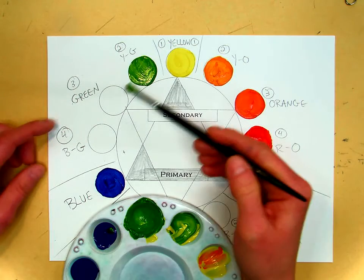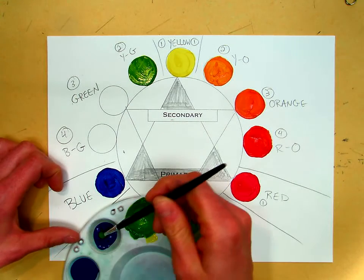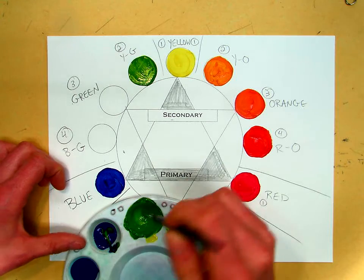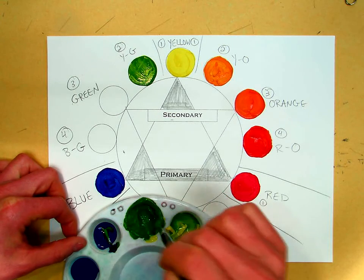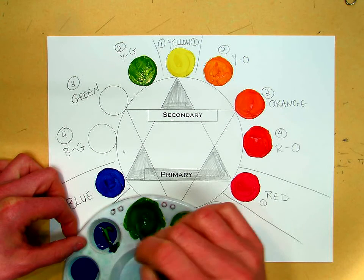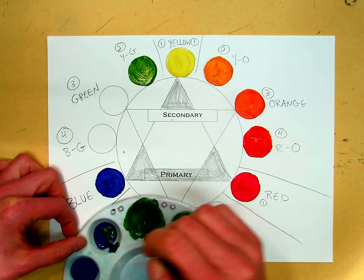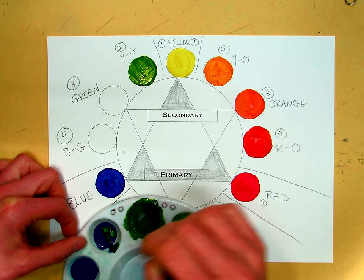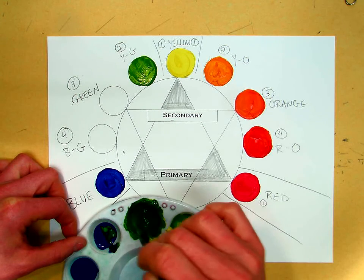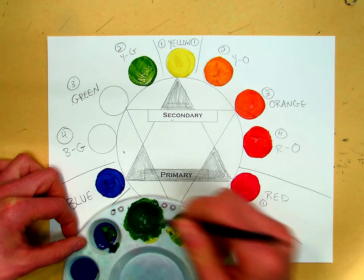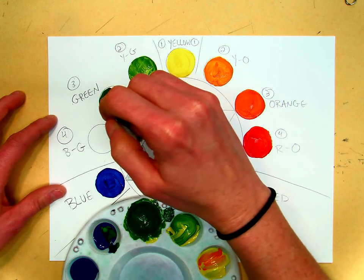So then to make green, what you're going to do is you're going to take your yellow-green and you're going to add more blue. Remember, blue turns the colors very quickly because it's got the strongest tinting power, so you just want to add a small amount, maybe a little bit more. You can always add more. Once you get your green, you can paint it in the green circle.